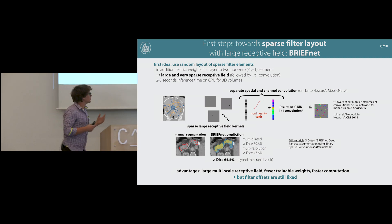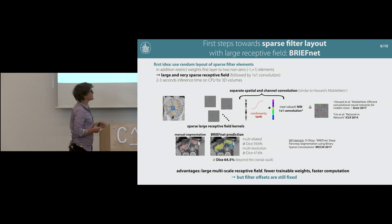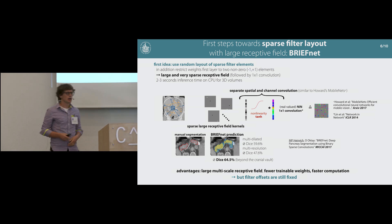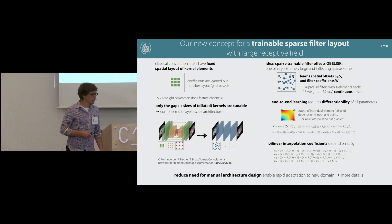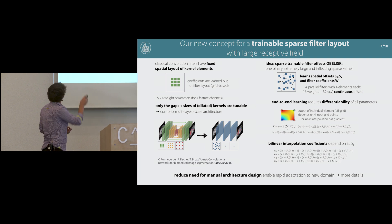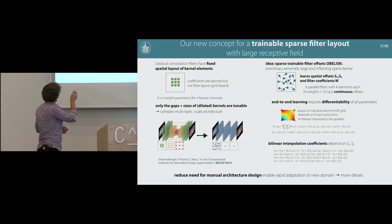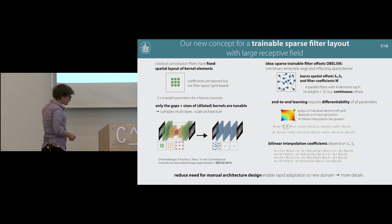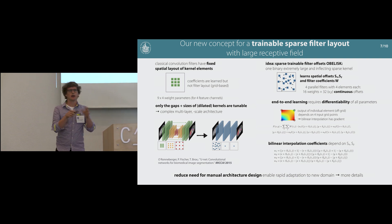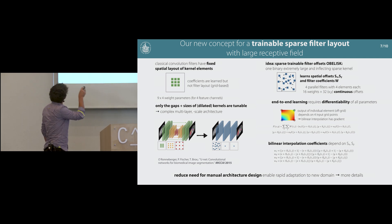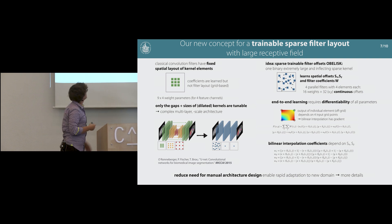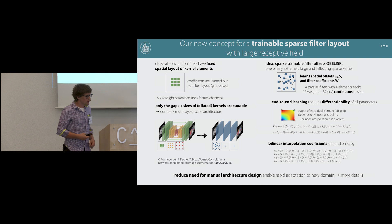While our previous approach had advantages — fewer trainable weights and fast computation even on CPU — the filter offsets were fixed and not learned within the network. To deal with this, we propose a new concept for a trainable sparse filter layout. Classical convolutions have a spatially fixed grid-based layout of coefficients — normally 3×3 or 5×5 kernels — where we only learn the coefficient weights. While there's some variability through kernel size or dilation, more or less everything is static, which is one reason we need more complex multi-layer architectures.